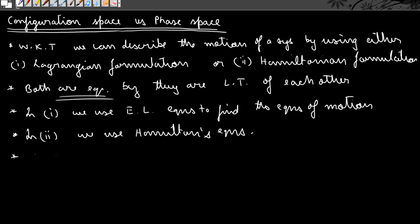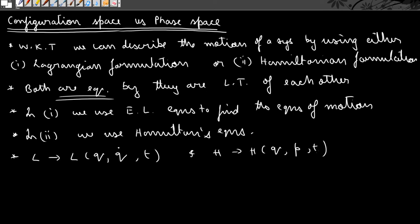We know that our Lagrangian is a function of the generalized coordinates, generalized velocities, and time. And our Hamiltonian is a function of the generalized coordinates, generalized momenta, and time.